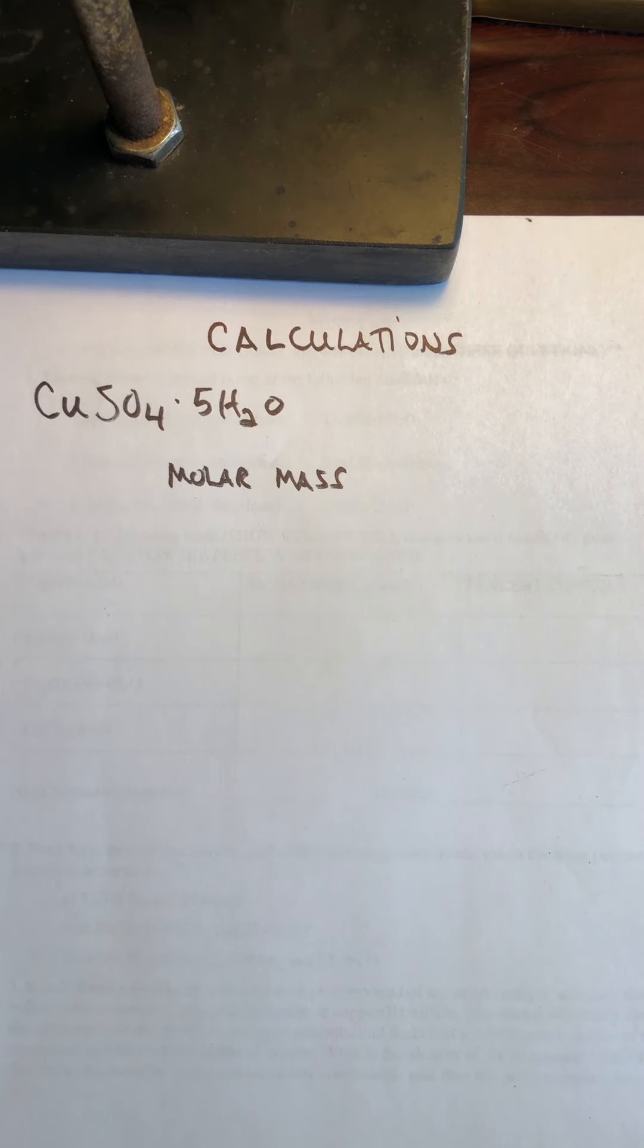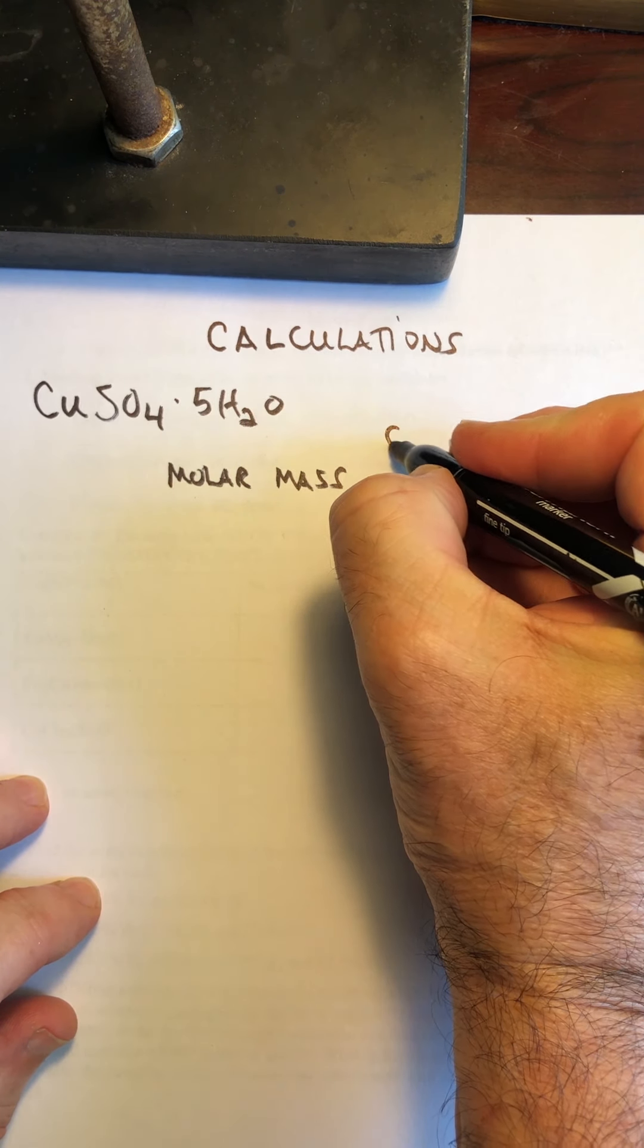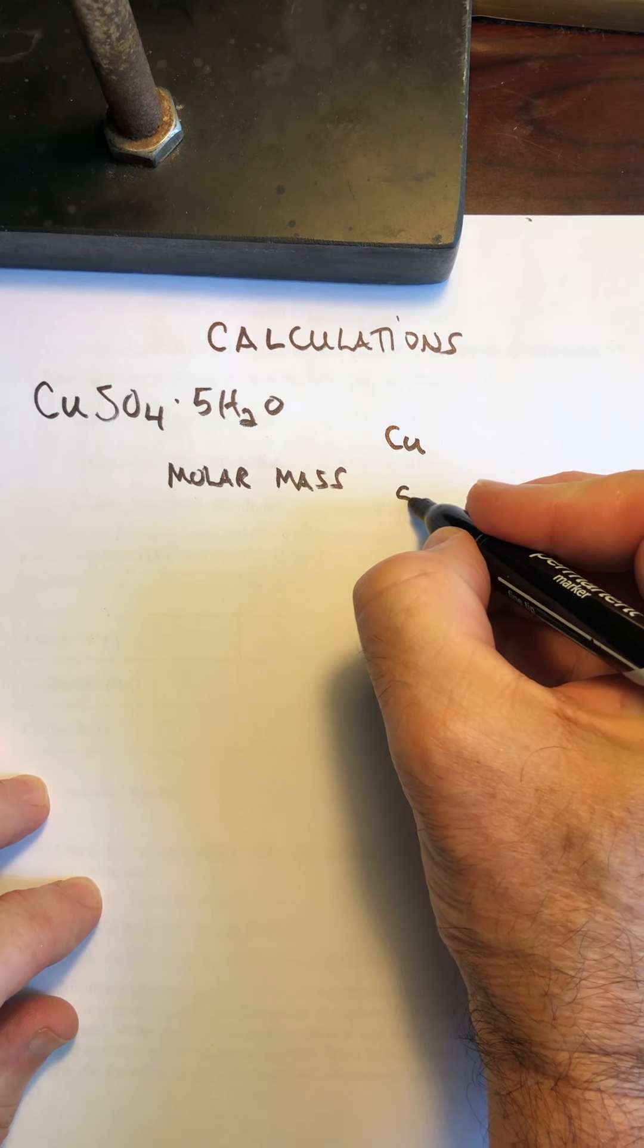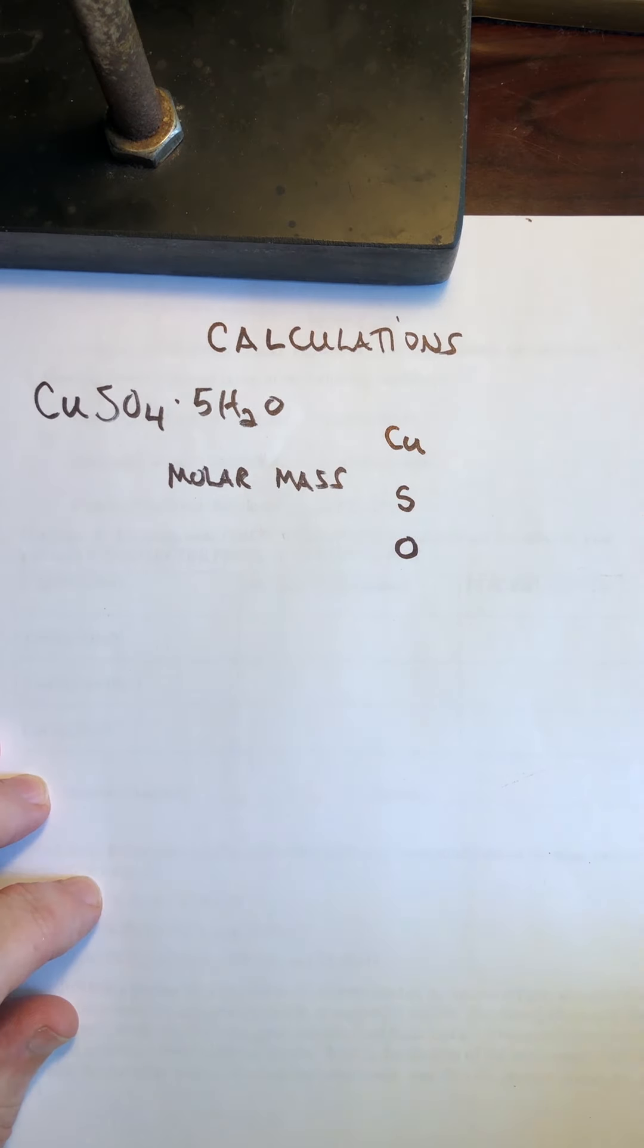So let's start out by calculating what the molar mass of this compound is. And you guys should know how to do this. I'm going to write down here what are the different elements in question. Copper, we have sulfur, and we have oxygen. And tell you what, you could calculate the oxygens and hydrogens in the water molecules separately.